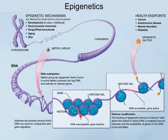Epigenetic marks can make DNA less accessible or more accessible. For example, having a methyl group added to the DNA makes the histones pack more tightly. The other common type is having acetyl groups added to the histones, which makes them looser so that genes become more accessible.